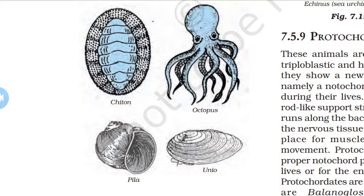Now we discuss Mollusca. These animals have bilateral symmetry. The body cavity is reduced, there is little segmentation, and they have an open circulatory system. Kidney-like organs are present for excretion. A foot is used for movement. Examples include snails, Pila, Unio, chiton, and octopus.